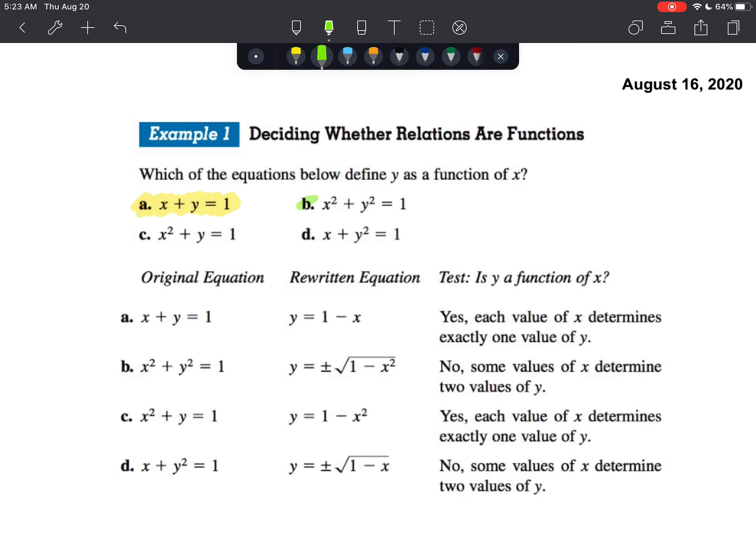In b, we know that that algebraic representation corresponds to a circle. Circles fail the vertical line test, therefore circles are not functions. We call them relations.